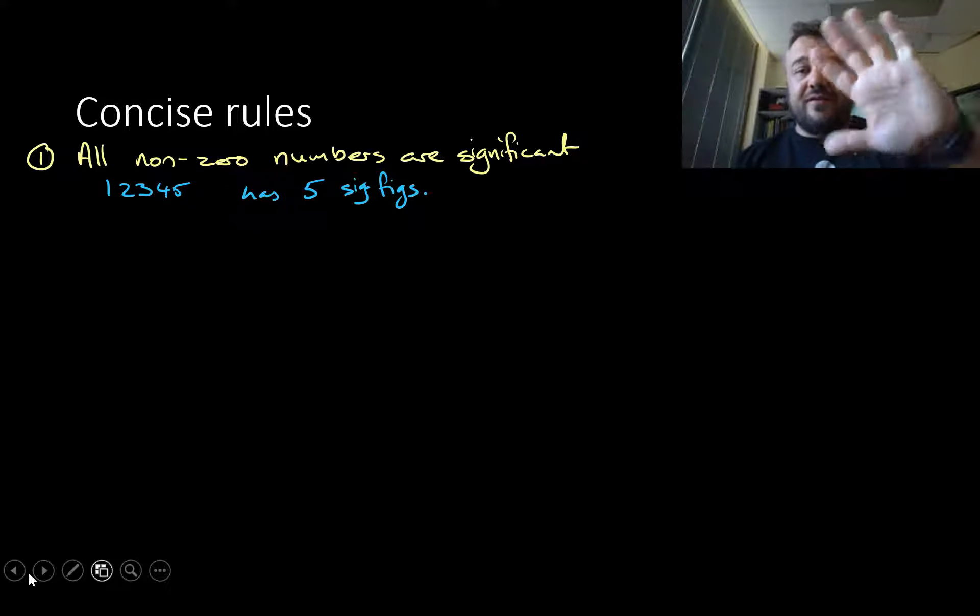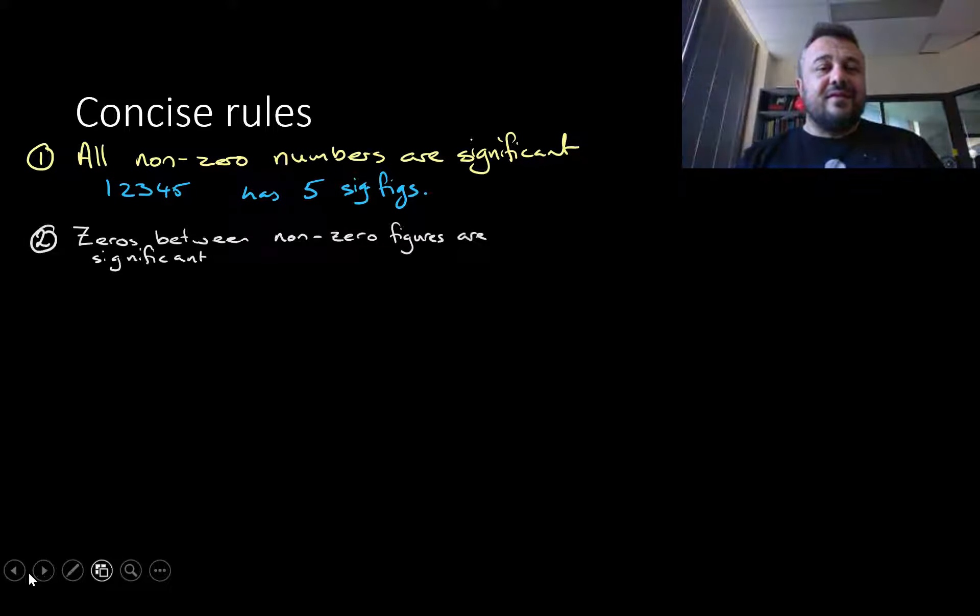Zeros between non-zero figures are significant. For example, 10025 and 100.25 both have five significant figures, and that means it was measured to that last significant figure.